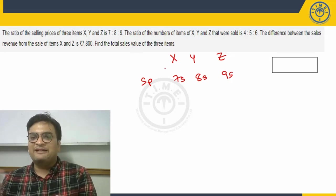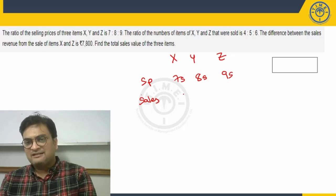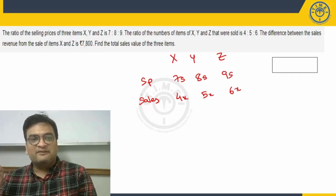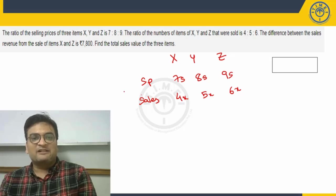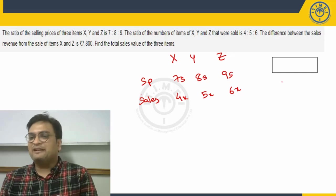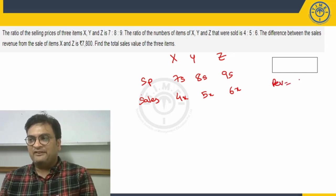Then he says the ratio of number of items of X, Y, and Z that were sold. So number of items sold, or rather can I simply write sales in units, it is 4 is to 5 is to 6. I can take it as 4x units, 5x units, 6x units. The difference between the sales revenue from the sales of item X and Z is 7800. How do we get the revenue?